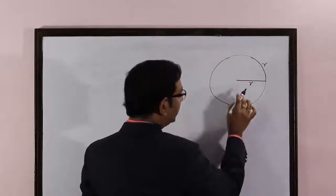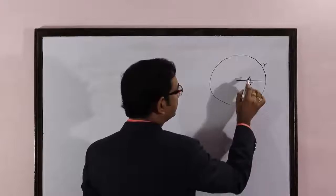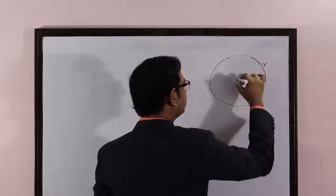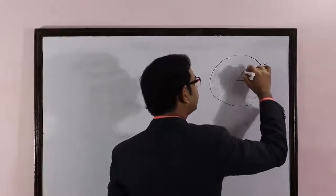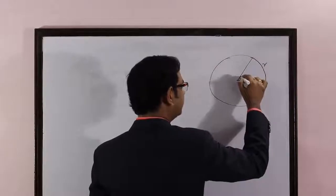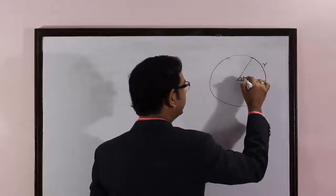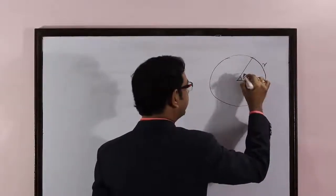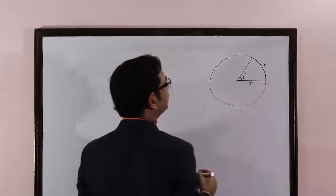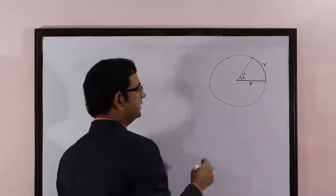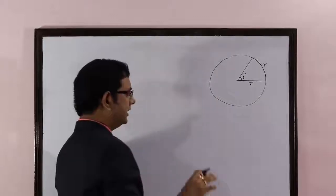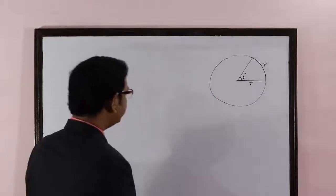Now, if we do this, then with this arc, the angle made at the center — whatever it is — will be one radian. We denote one radian as rad or C. This is one radian. It's very simple.